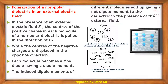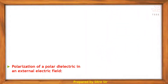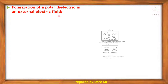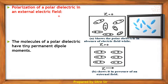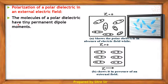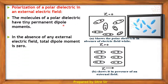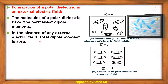The next point is polarization of a polar dielectric in an external electric field. In this case, the molecules of a polar dielectric already have tiny permanent dipole moments — each molecule shows a dipole with plus and minus poles because the center of gravity for the positive charges and the center of gravity for the negative charges are separate.